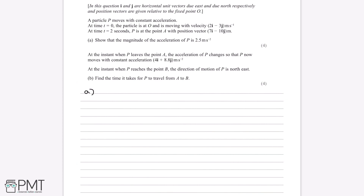The first thing to note is that the particle P is moving with constant acceleration. We're also told the velocity of the particle and the position vector, which we can also call the displacement. We want to find acceleration, and one way we can do this is to use the constant acceleration formula — we can do that because we're told that acceleration is constant.